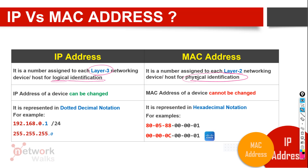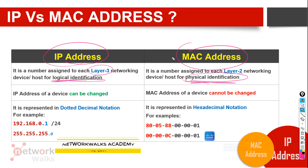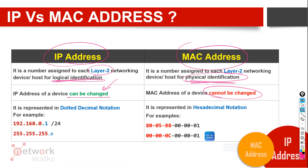So we have two types of addresses: one for physical local identification and one for logical identification. That's why IP addresses keep on changing — they can be changed — while MAC addresses cannot be changed.